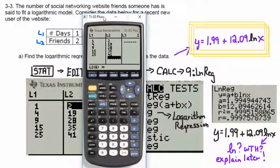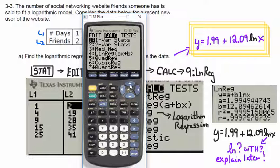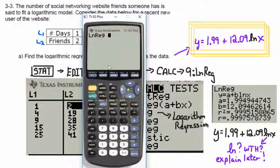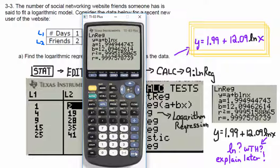To calculate the equation, I go stat, calculate. I want the ln regression — not the logistics equation, that's different. I'm going to select enter. While I'm at it, I'll do vars, yvars, function, y1. That way when it calculates the equation it'll paste it into the y-equals equation editor. I hit enter — it tells me the answer, there's the equation. Notice from the 0.9999 r-squared that it's a pretty good fit.